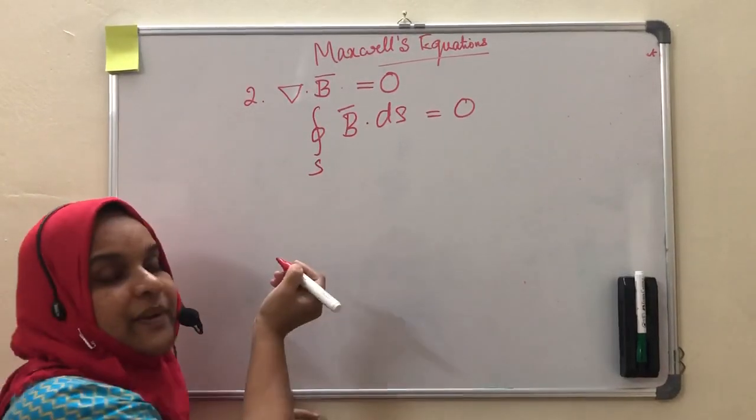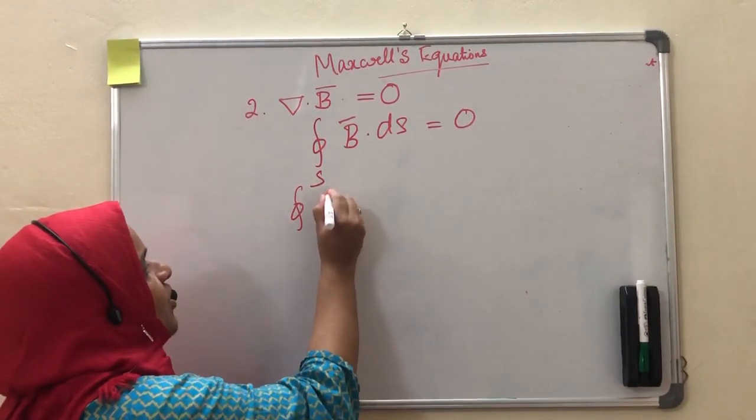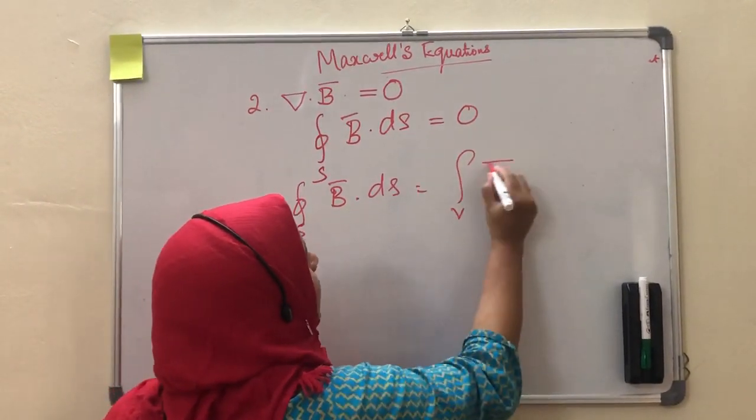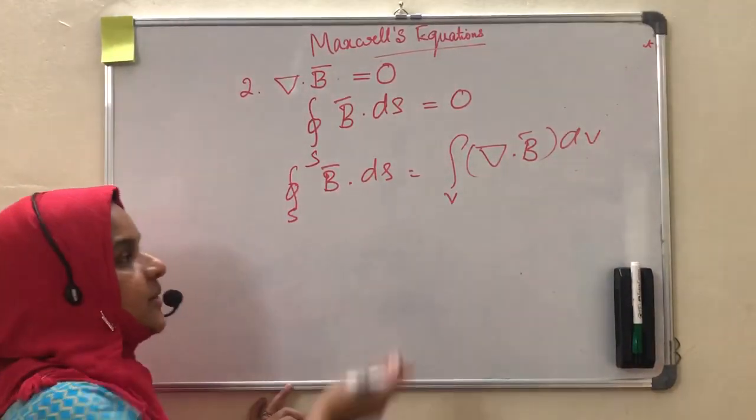Then here we can apply the Gauss's divergence theorem. That is, surface integral of B dot ds is equal to volume integral of del dot B dv by applying Gauss's divergence theorem.